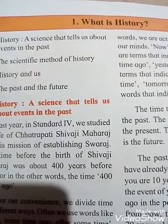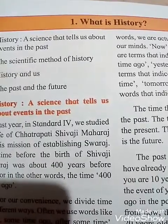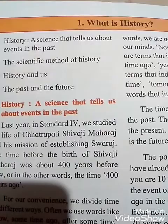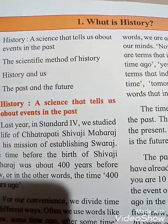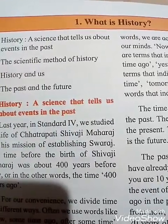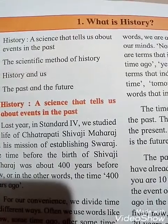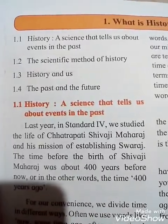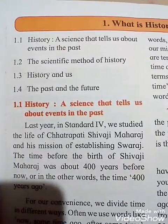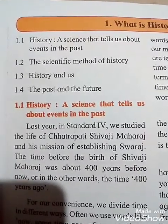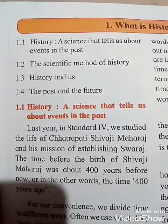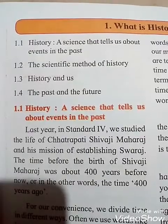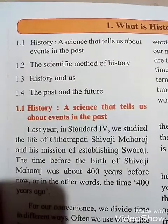What is history? History means a science that tells us about events in the past. Whatever things have happened in the past that we come to know about — that is history. So section 1.1: History — a science that tells us about events in the past.